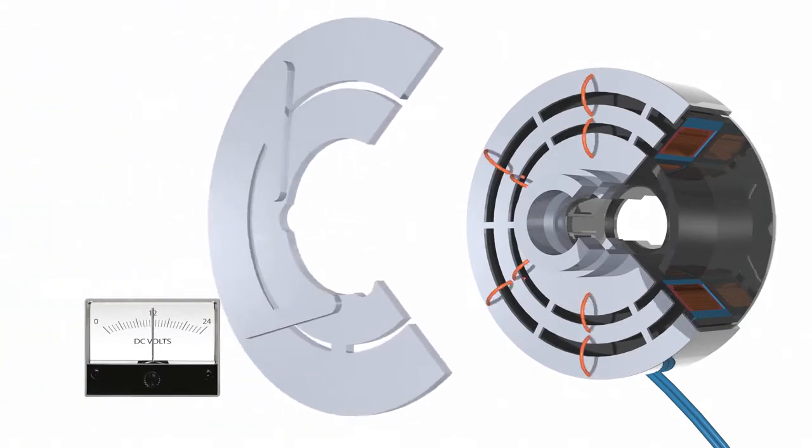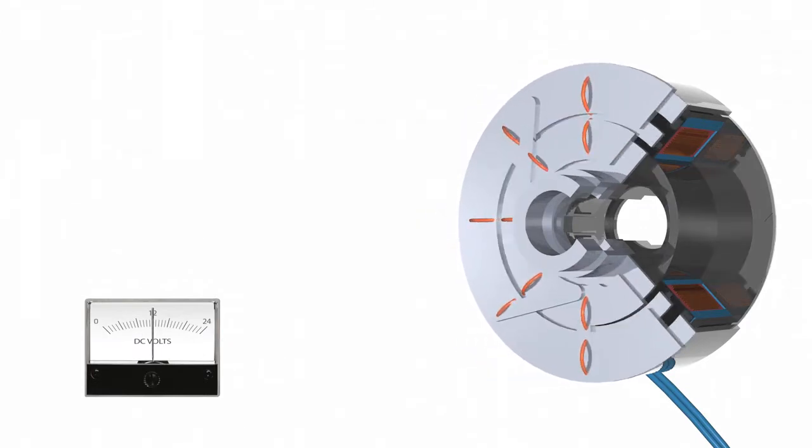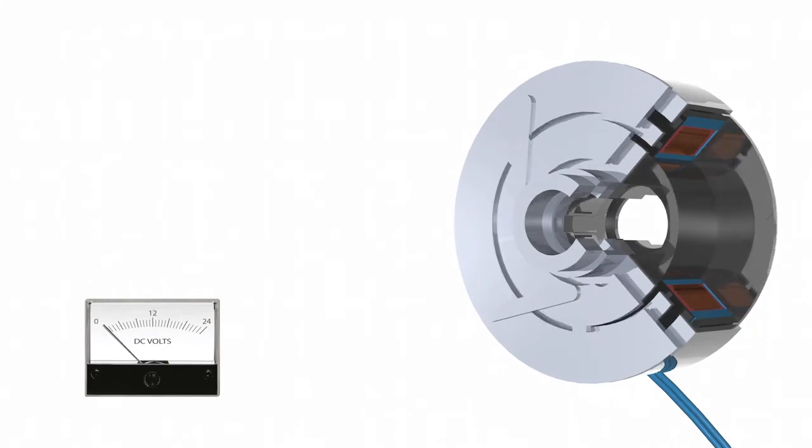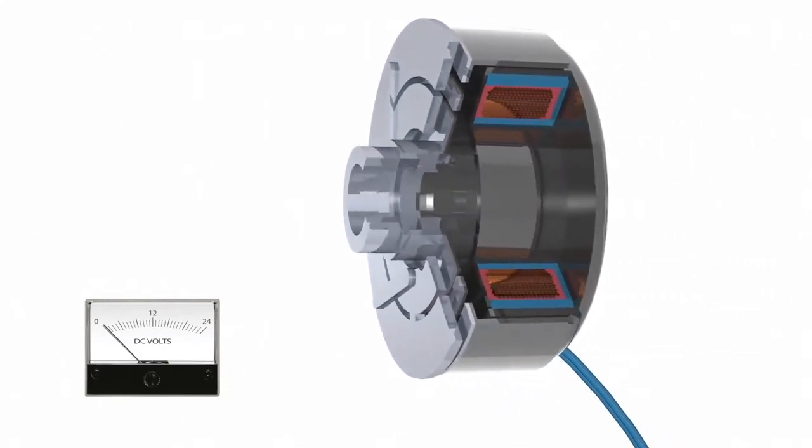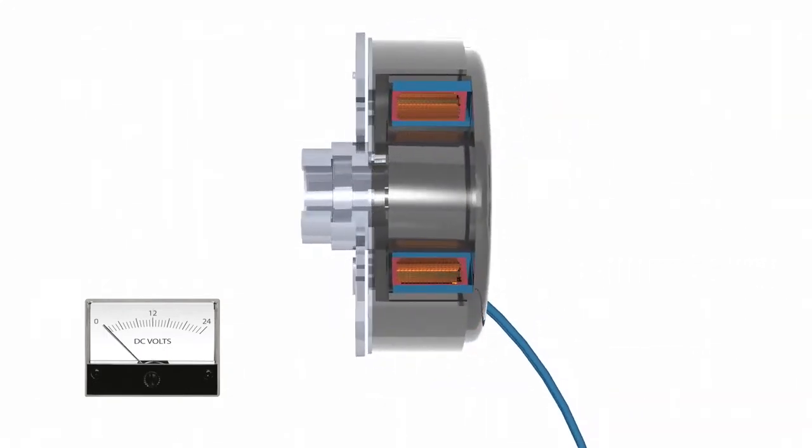PTO clutch brakes use either a double or triple flux design. As the flux travels from the rotor to the armature, it makes multiple points of contact amplifying the torque being transferred.